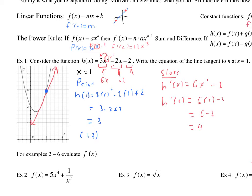Now that I have my point and my slope, we can write the equation of the line: y minus 3 equals m times x minus 1, where the y value of the point is 3, the x value is 1, and the slope at that point is 4. So that's the equation of the tangent line.